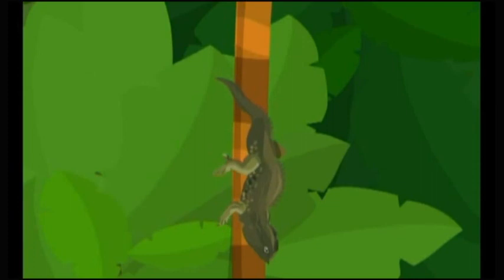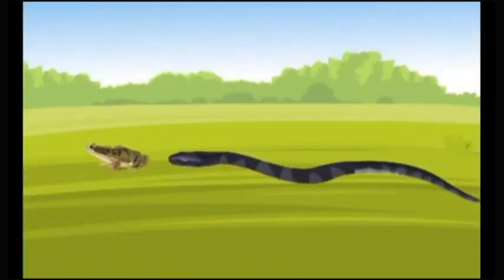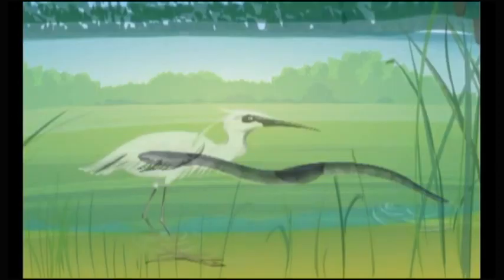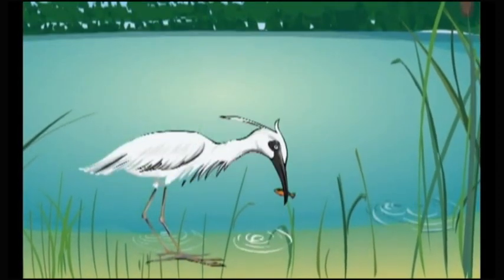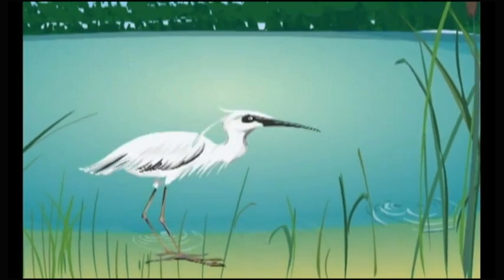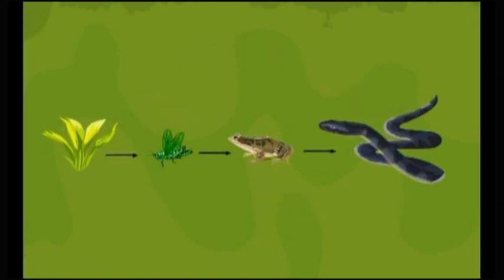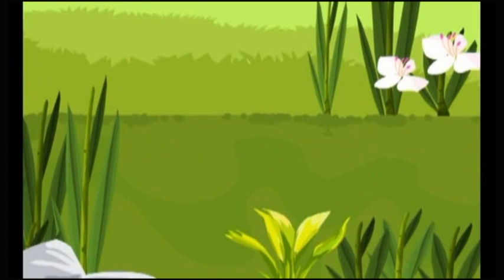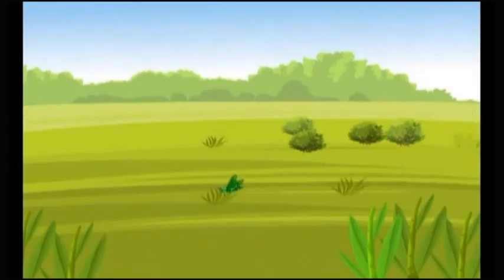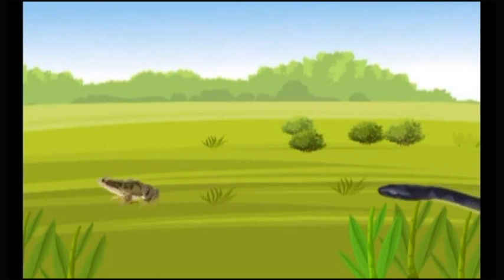Carnivores which consume secondary consumers are called tertiary consumers. Snakes that eat frogs and birds that eat fish are examples of tertiary consumers. An ecosystem therefore consists of primary producers, primary consumers, secondary consumers, and tertiary consumers. Primary producers become food for primary consumers, primary consumers become food for secondary consumers, and secondary consumers become food for tertiary consumers. This is called a food chain in the ecosystem.